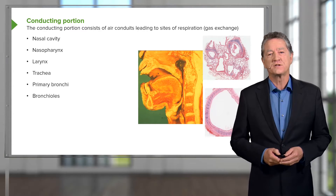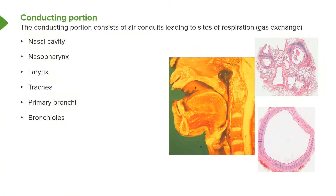Let's first look at the conducting portion. In this slide on the right-hand side you see three images. One is a section through the head region showing you the oral cavity with the tongue and the nasal cavity above it. The very circular-like structure down on the bottom right-hand side of this slide is a section through the trachea.